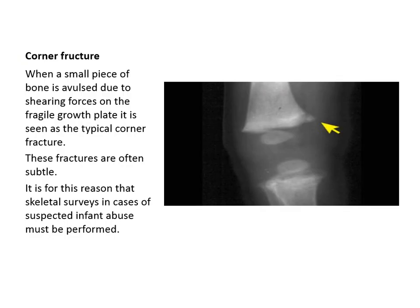Corner fracture is regarded as pathognomonic for child abuse. Small bone avulsions occur due to shearing force on the fragile bone growth plate, seen as the typical corner fracture. This fracture is often subtle, which is why a skeletal survey is indicated — most fractures in children are subtle and don't appear initially. This happens when the parent holds the child by the elbow too forcefully, causing the corner of the bone to fracture. That is why it is highly specific for child abuse.